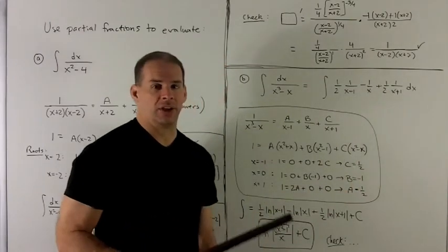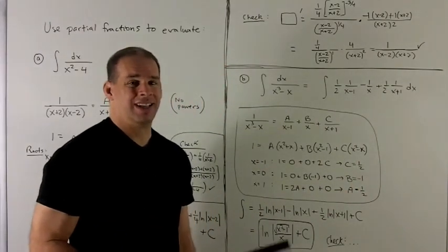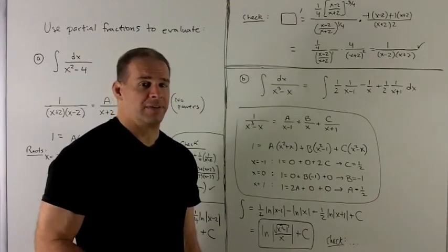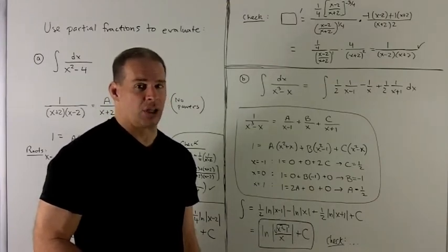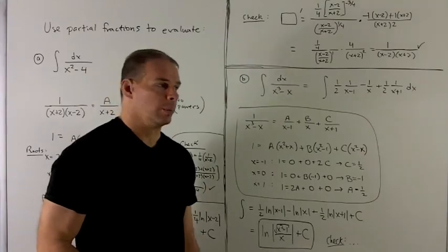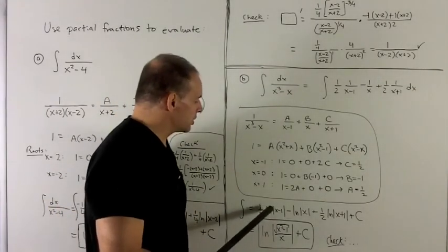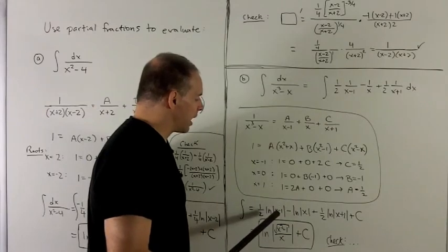So we're looking at, if I let u be equal to the denominator, du over u. So the indefinite integral is going to be natural log absolute value of u. So for each of these terms, we're just taking natural log absolute value, whatever's in the denominator.